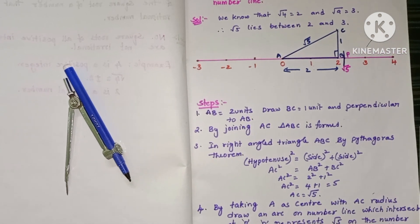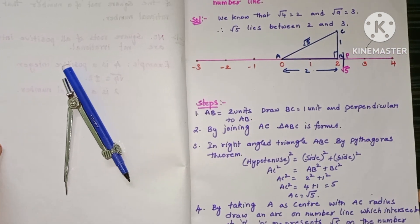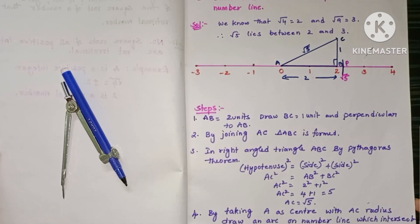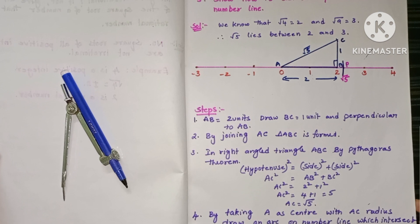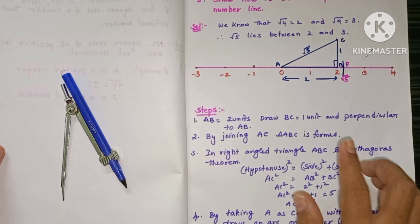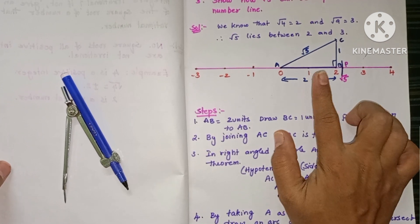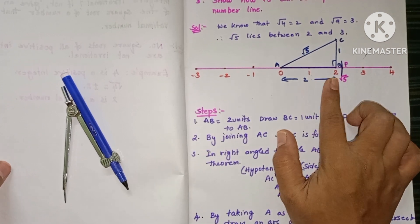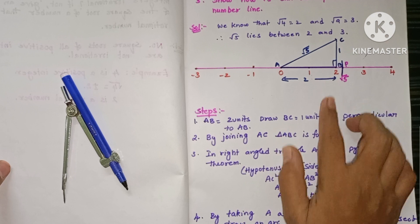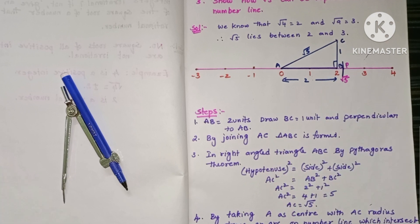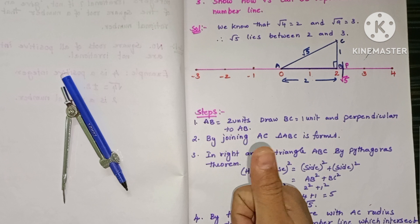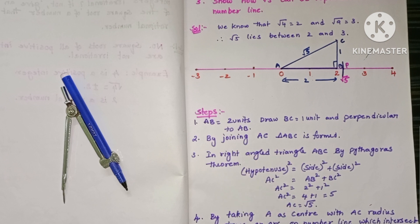So students, this is how you can represent √5 on the number line. Please share this video with your friends, like this video, and subscribe to my channel. Thank you for watching.